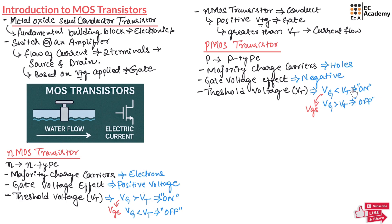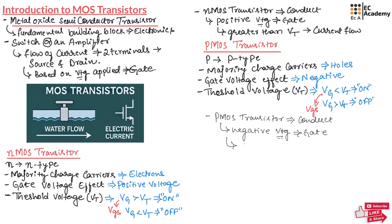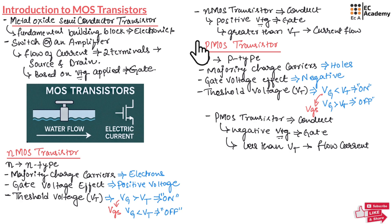This concept is very important to understand MOS Transistors. A PMOS Transistor will conduct when a negative voltage is applied across the gate and this negative voltage should be less than the threshold voltage — meaning more negative — for current to flow. The threshold voltage is the minimum voltage required by the transistor to turn on.